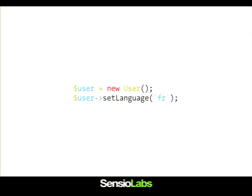Using that is exactly the same as before — it's not more complex. I have two objects, but using the user class is as easy as before. I'm creating a user, and then I'm setting the language. I have no idea what's going on behind the scenes, and I don't care actually. I want to create a user and I want to be able to set a language. Everything else is not that important from a developer perspective.